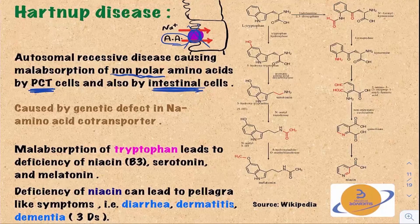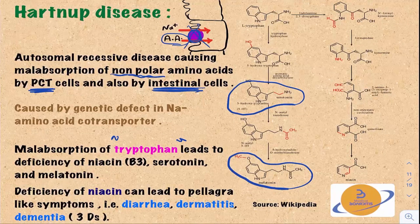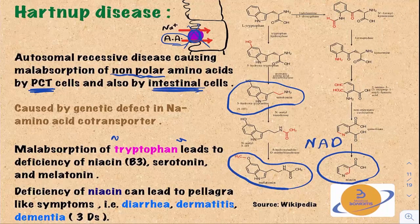The most important of all these nonpolar amino acids is tryptophan, because tryptophan is the precursor amino acid in the formation of three important substances. The first is serotonin, which is a major neurotransmitter in the brain. The second is melatonin, another neurotransmitter important for wakefulness. And also niacin, or NAD — nicotinamide adenine dinucleotide.